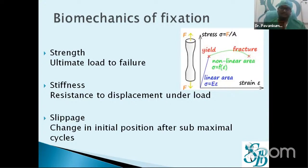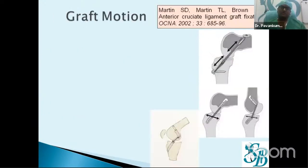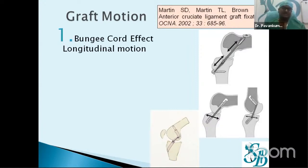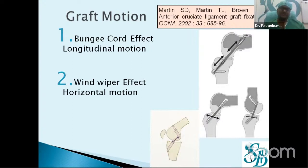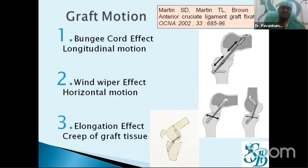Looking at the stress versus strain curve: strength refers to the ultimate load to failure, stiffness is the resistance to displacement under load, and slippage is the change in initial position after sub-maximal cycles. Regarding graft motions, Dr. Barger-Charlie Brown published in 2002 in CNA describing the bungee cord effect — longitudinal motion — the wiper or windshield effect — horizontal motion — and elongation or creep within the graft tissue. These are the three major graft motions that occur.